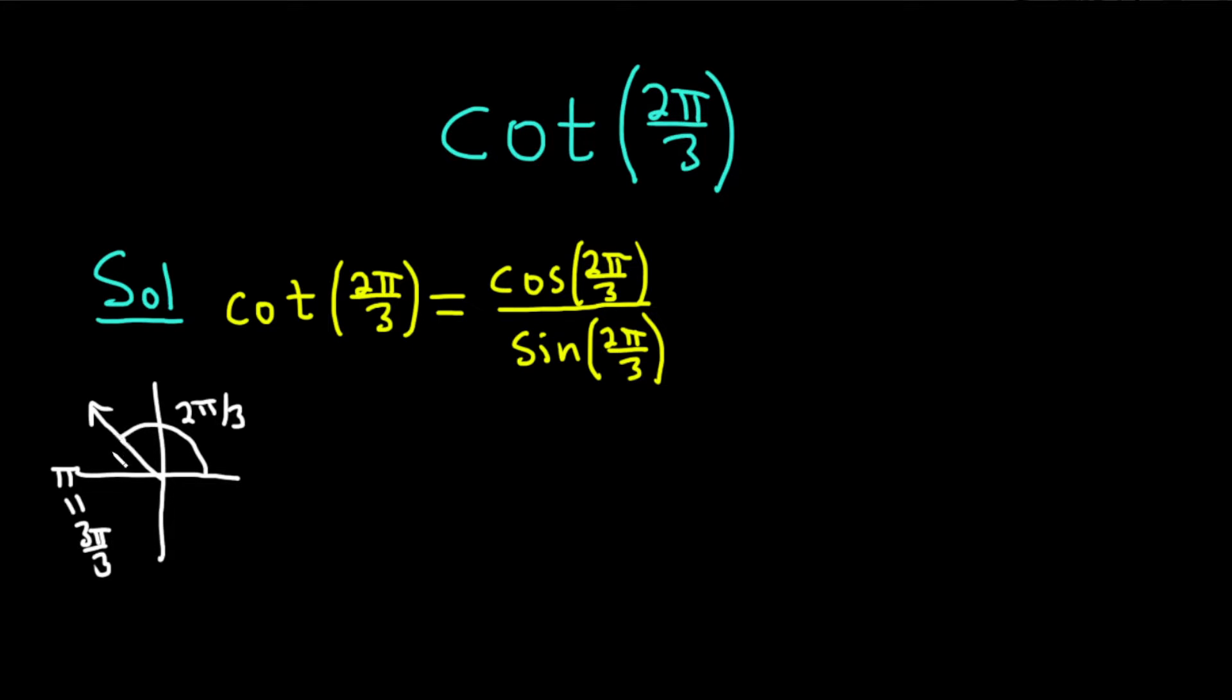Now we're going to find what's called the reference angle. The reference angle is the angle made between the terminal side of our angle, 2 pi over 3, and the positive x axis. It's the positive angle made between the terminal side of your angle and the x axis. You can see from this picture that it's clearly pi over 3 because 3 pi over 3 minus 2 pi over 3 is pi over 3. So the picture gives you the reference angle.